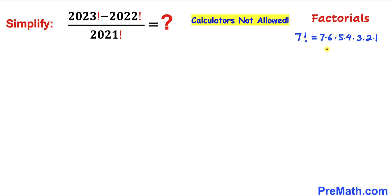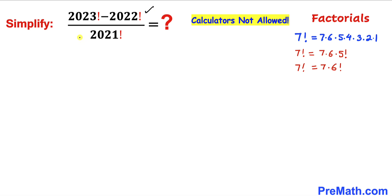Seven factorial can also be written as 7 times 6 times 5 factorial — we can stop right there. And seven factorial can also be written as 7 times 6 factorial. We are going to use this concept in simplifying the given problem. Let's focus on this problem.